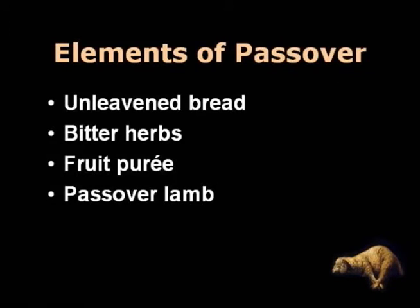Let's look at some of the elements of the Passover meal as it might have been held in Jesus' day. Each element of the meal was blessed and then commented on — called the Haggadah — by the head of the household, in this case Jesus. Unleavened bread was a symbol of past misery and the speed with which the Israelites had to pack and leave before the bread had risen (Exodus 12:34). Bitter herbs represented the bitterness of slavery (Exodus 12:8). Fruit puree was reminiscent of the clay the Israelites used to make bricks in their captivity as slaves in Egypt. And the Passover lamb was a reminder of God's merciful passing over.